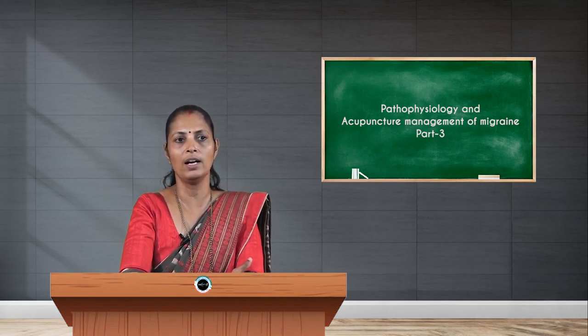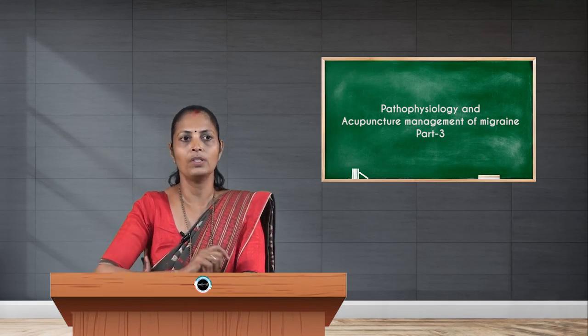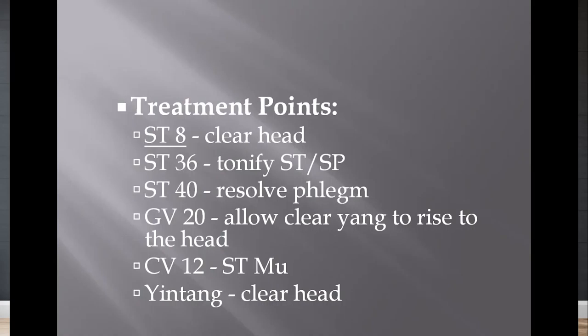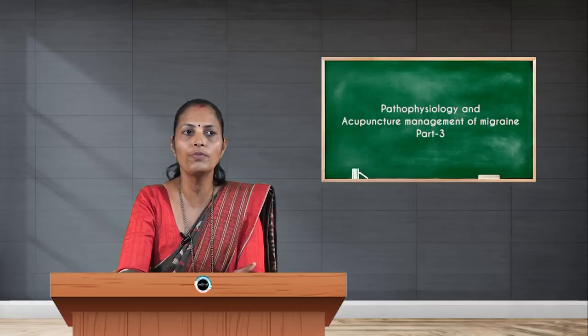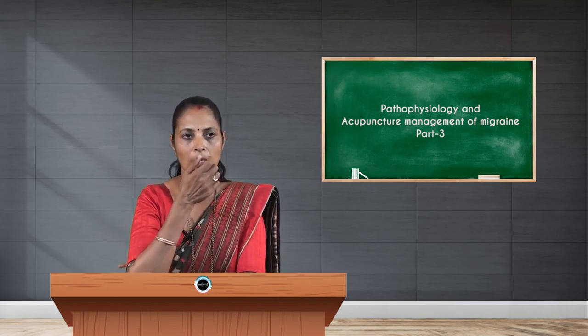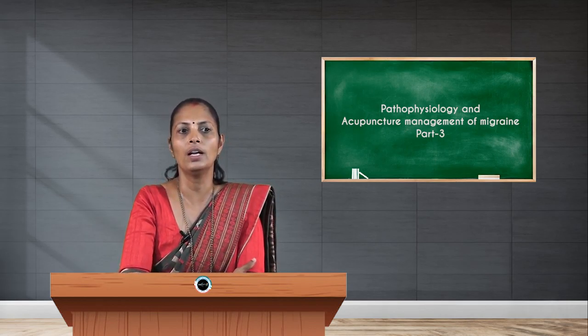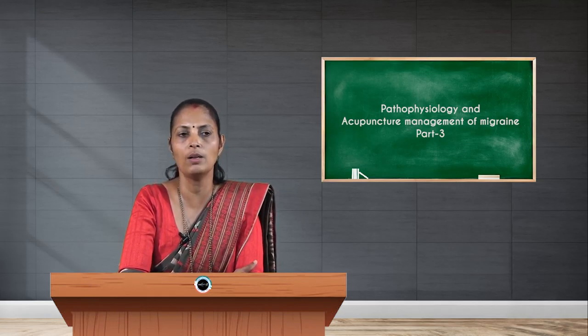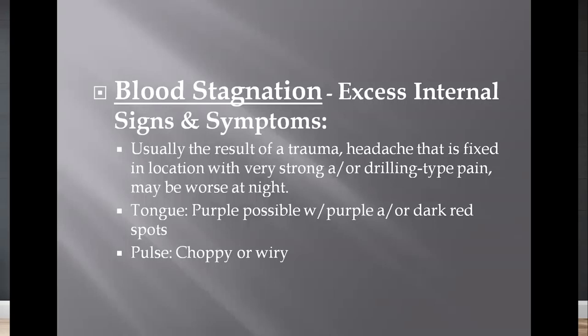This is also associated with nausea and vomiting of watery mucus. The tongue may look greasy, white, and coated; pulse is slippery. Treatment options: Stomach 8 clears the head region; Stomach 36 tonifies the stomach and spleen; Stomach 40 helps to resolve phlegm; GV 20 allows clear yang to raise to the head. CV 12 acts as the Mu front point for the stomach. Yintang, the extra point, again helps to clear mucus from the head region.